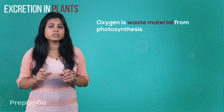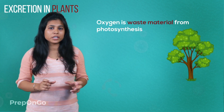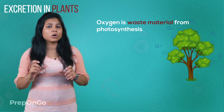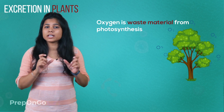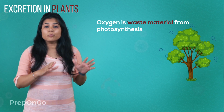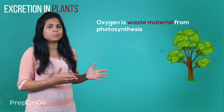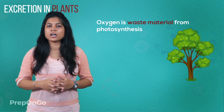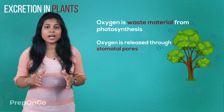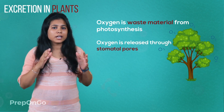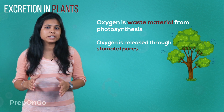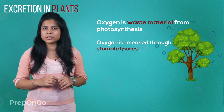Oxygen is the waste product generated during the process of photosynthesis. Oxygen is also one of the major gaseous excretory products of the plant. The waste product of the plant is our important component. This oxygen is released or excreted out by the plant through the stomatal pores.